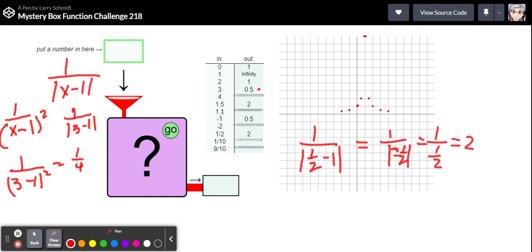One over one half is two and that is exactly what we got. So I think this has got to be, I think it's one over the absolute value of x minus one.